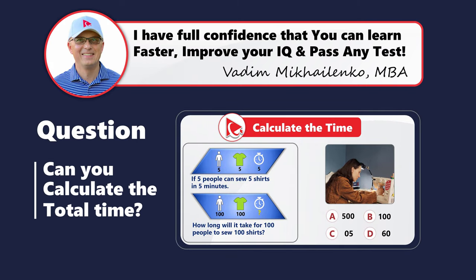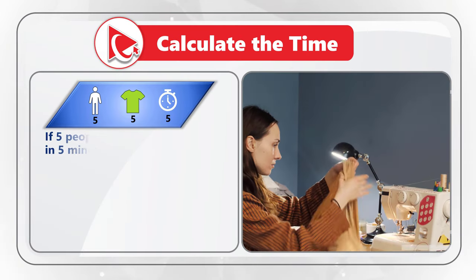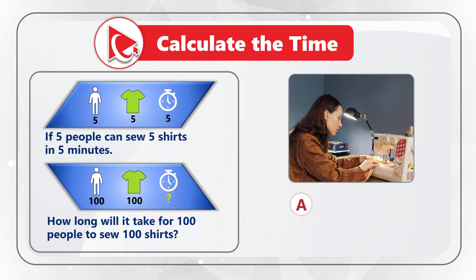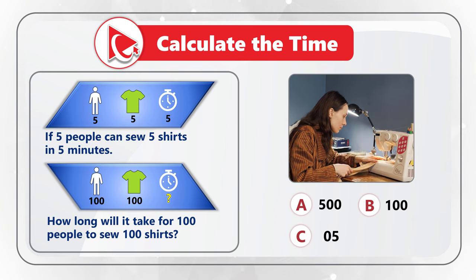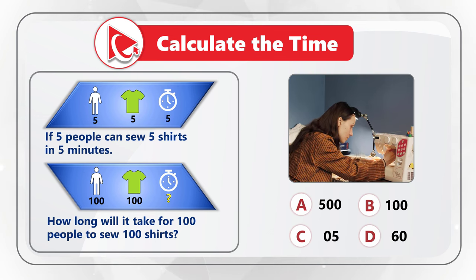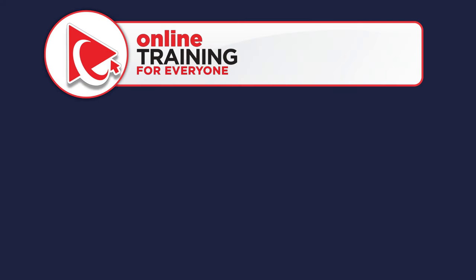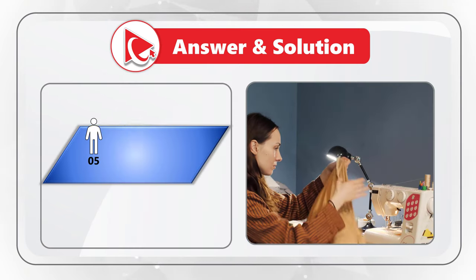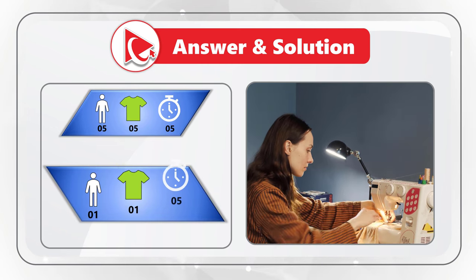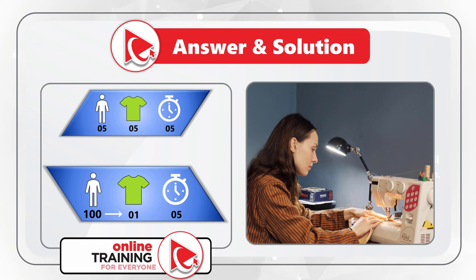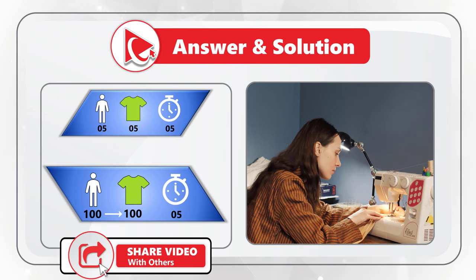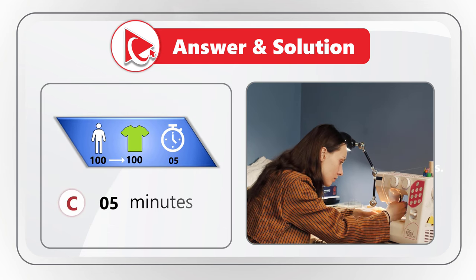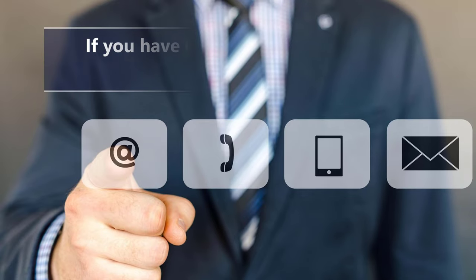Here's an interesting question that might make you think. If 5 people can sew 5 shirts in 5 minutes, how long will it take 100 people to sew 100 shirts? Choices: A is 500 minutes, B is 100 minutes, C is 5 minutes, D is 60 minutes. The trick: if 5 people sew 5 shirts in 5 minutes, then 1 person sews 1 shirt in 5 minutes. With 100 people working together, their combined productivity scales up, so it still takes 5 minutes to sew 100 shirts. The correct answer is Choice C, 5 minutes.